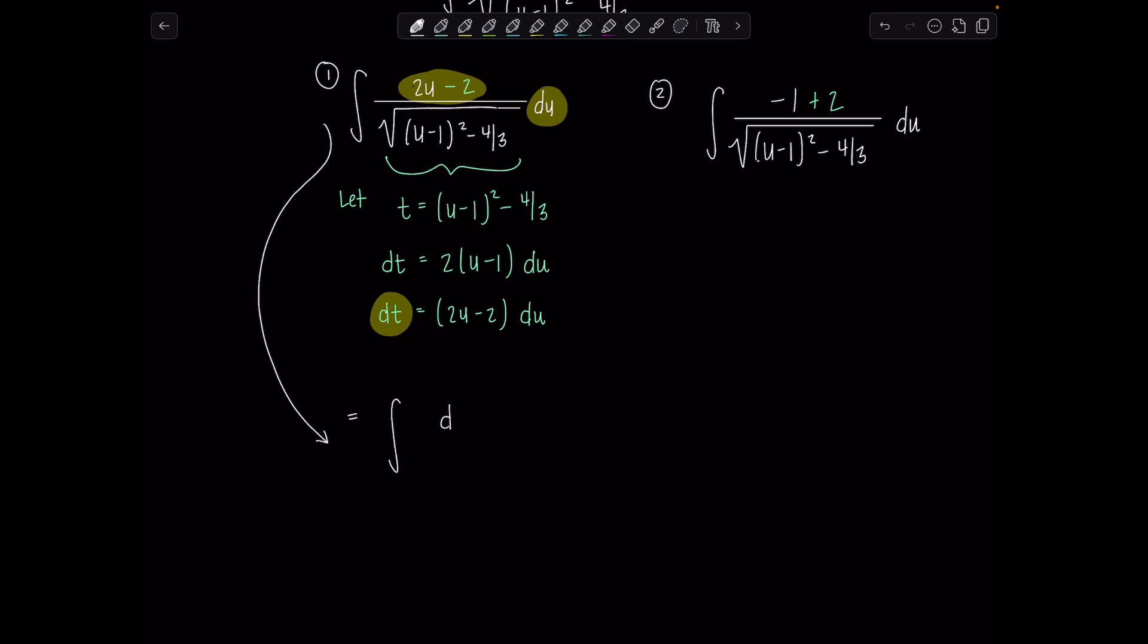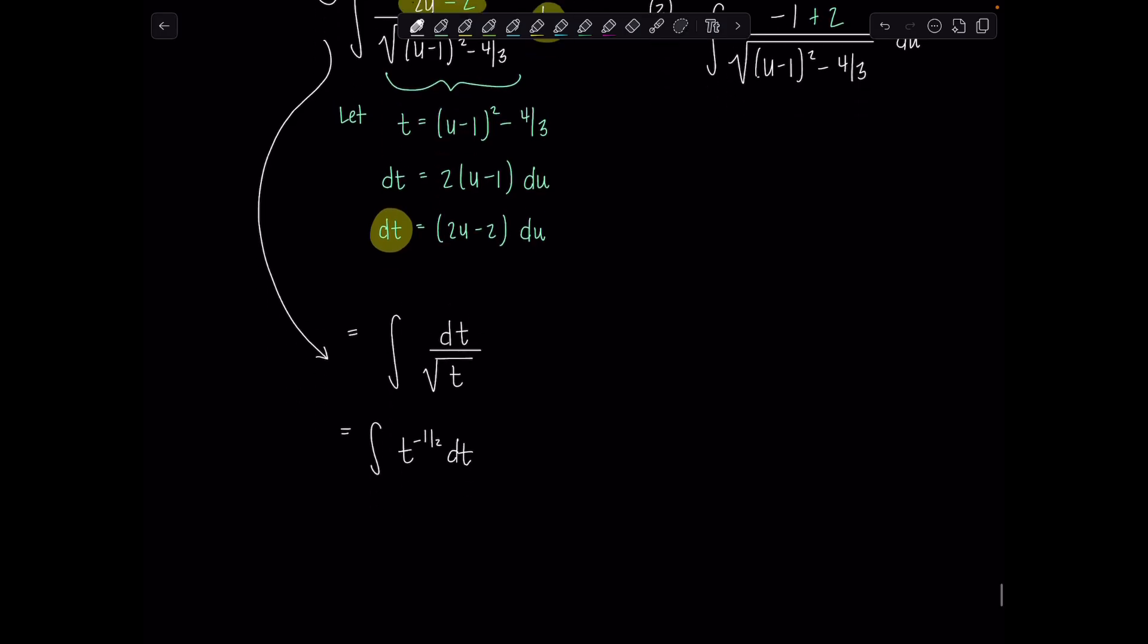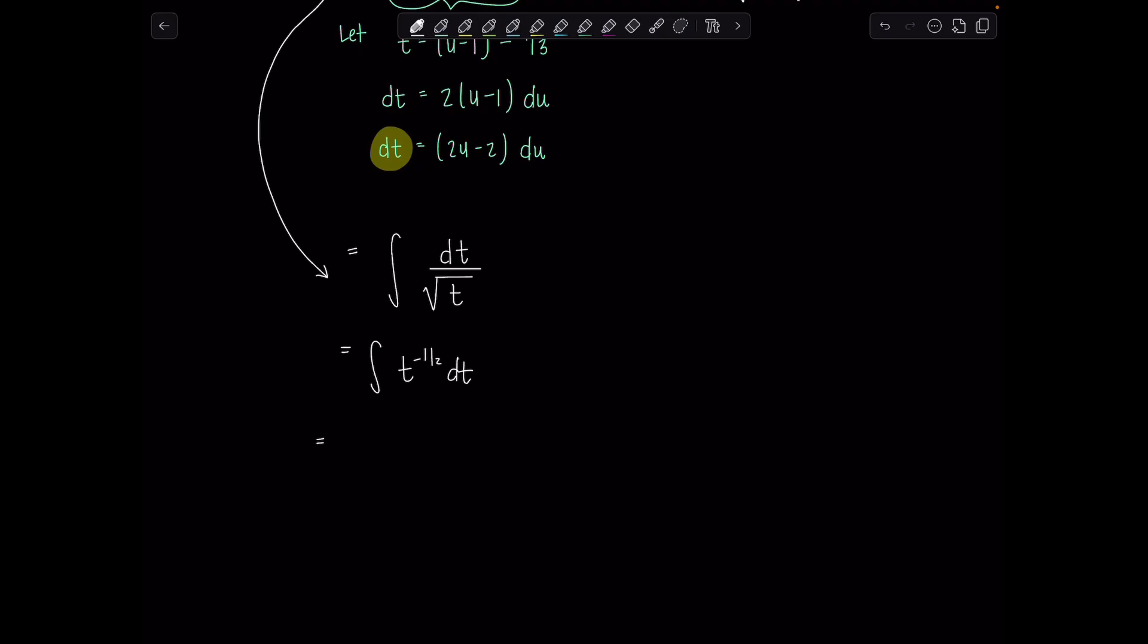So now this first integral is super straightforward because this numerator 2u minus 2 du, that's just dt. We've got dt over square root of t. If you want to rewrite it, this is integral t to the negative one half dt. Take antiderivative. Add one to the exponent. Divide by the new exponent. It's 2t to the one half.